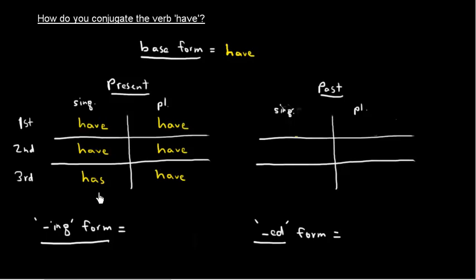And it's actually other than has that's pretty regular. In the past tense. I had. You singular had. He, she, it had. And then plural we had. You plural had. And they had.